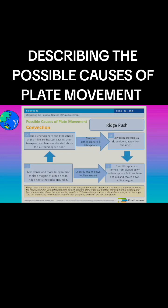The ridge push starts from the less dense and more buoyant hot molten magma at a mid-ocean ridge which heats the rocks around it. The asthenosphere and lithosphere at the ridge are heated, causing them to expand and become elevated above the surrounding seafloor.